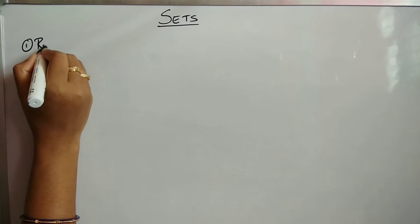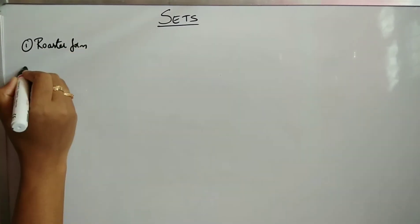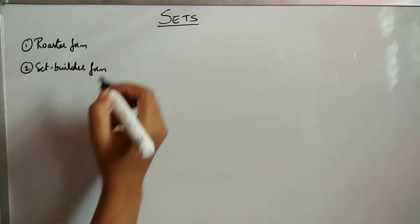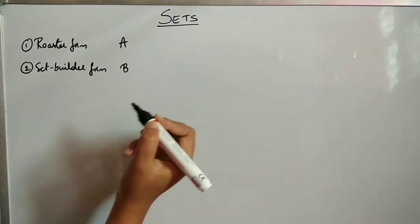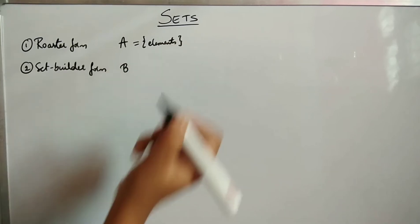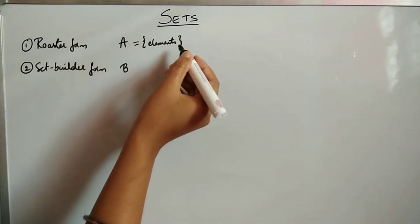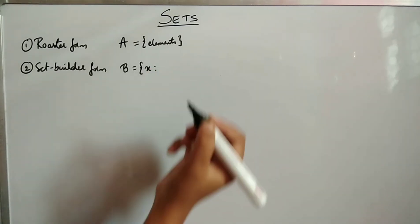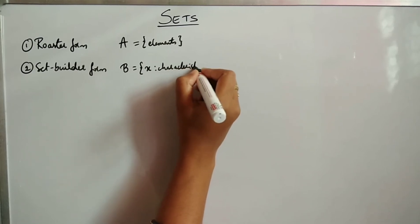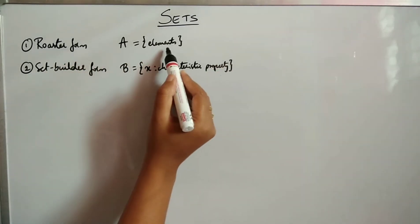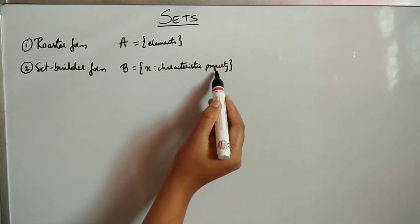Next we will see how to represent a set. There are 2 methods: roster form and set builder form. In either form we represent a set with a capital letter. In roster form we list all the elements within braces. In set builder form we use a small letter followed by a colon and the characteristic property of the element.